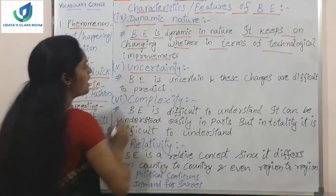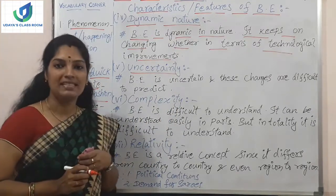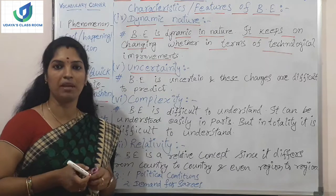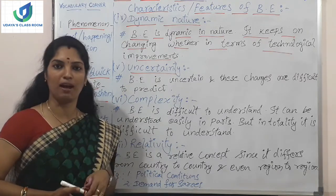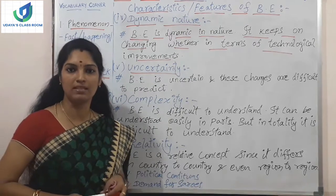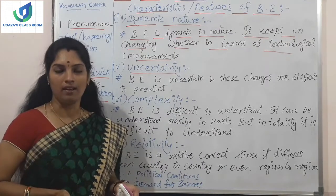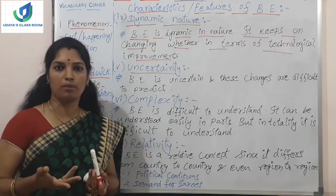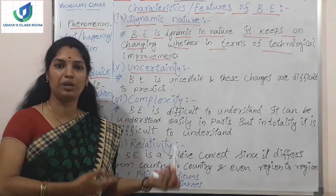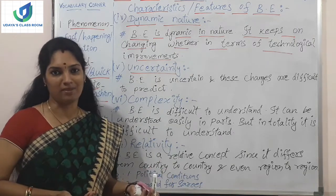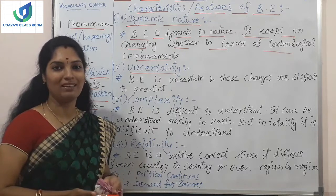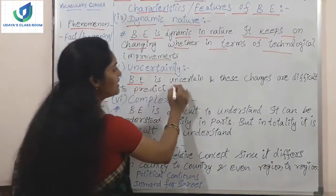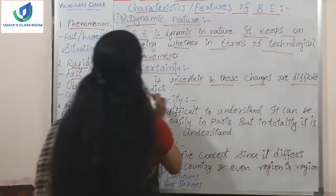The next feature is uncertainty. Business environment is not certain — we cannot predict what is going to happen next in the business. We can plan and execute, but we cannot predict what will happen. For example, have we predicted COVID-19? We were engaged in day-to-day activities and all of a sudden we were locked down. We cannot predict what is going to happen in the future. Business environment is uncertain and these changes are difficult to predict.